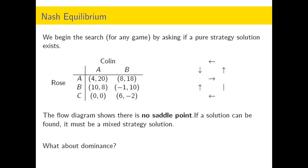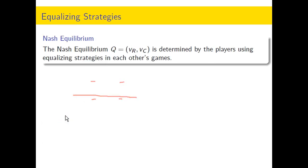Notice that there is dominance: Rose prefers 4 to 0 and 8 to 6, so you could say that for Rose, strategy C is dominated. However, we're going to find out that there's some threat leverage she has with that particular strategy, so we're going to leave it in for now.